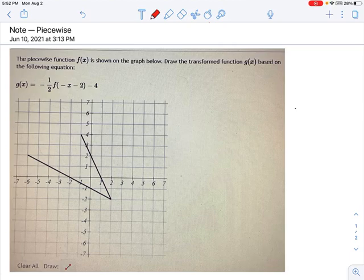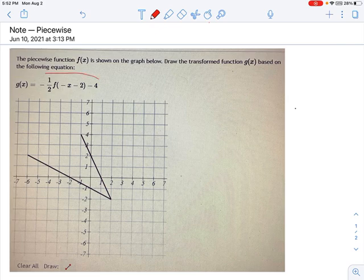We are told in this problem to transform a piecewise function. The piecewise function is shown in black, it's f(x), and we're told what kind of transformations have to happen on it with this equation right here for g(x), the transformed function.